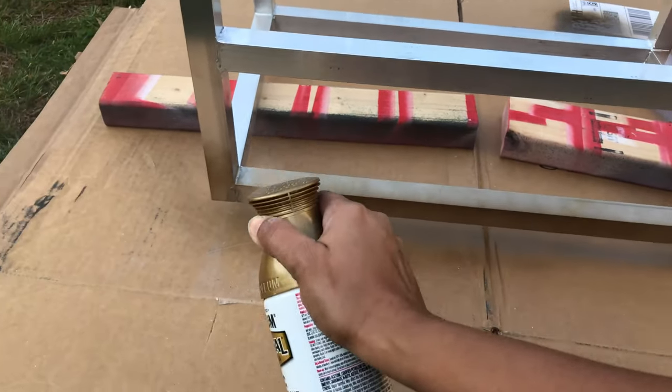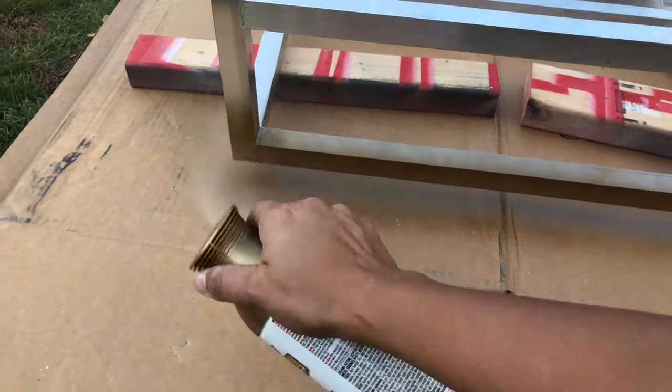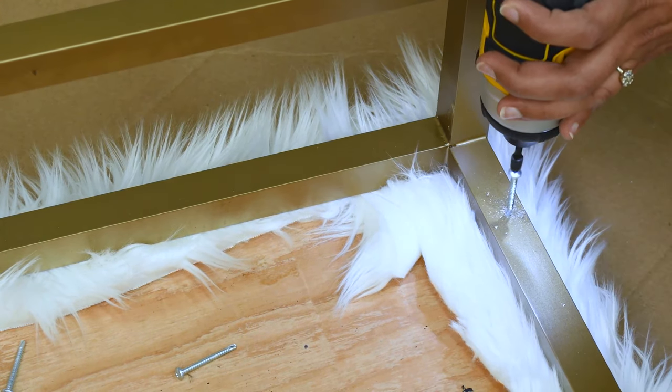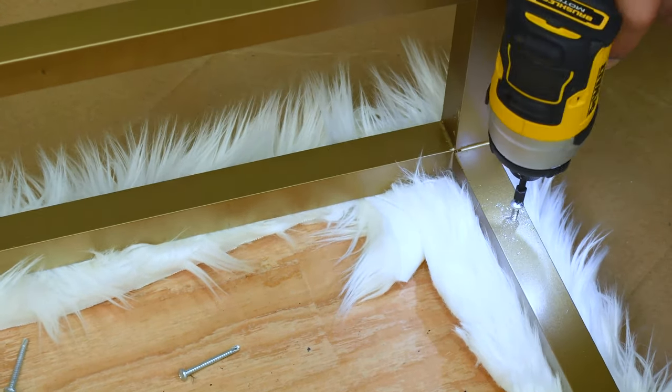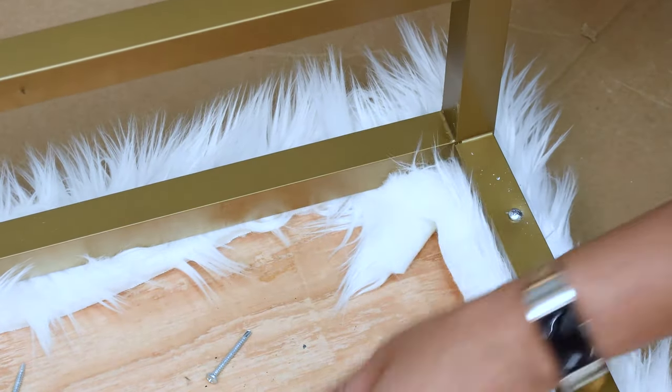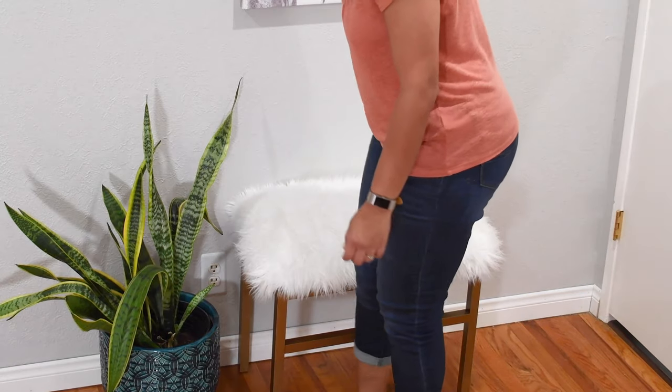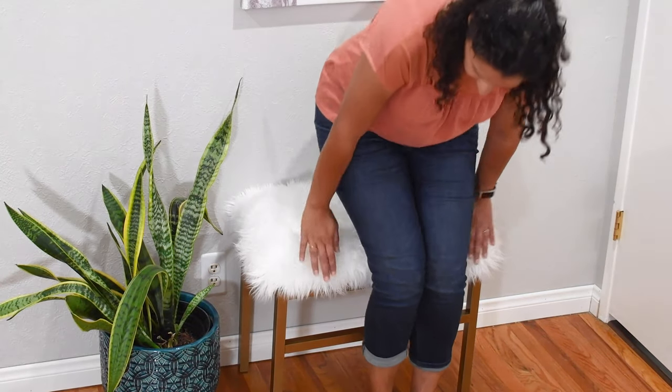Once it was ready, I took it outside and gave it a few coats of satin bronze spray paint. Then I attached an upholstered top to the metal frame from the inside using one and a half inch self-tapping metal screws. The resulting bench is surprisingly strong and I love it.